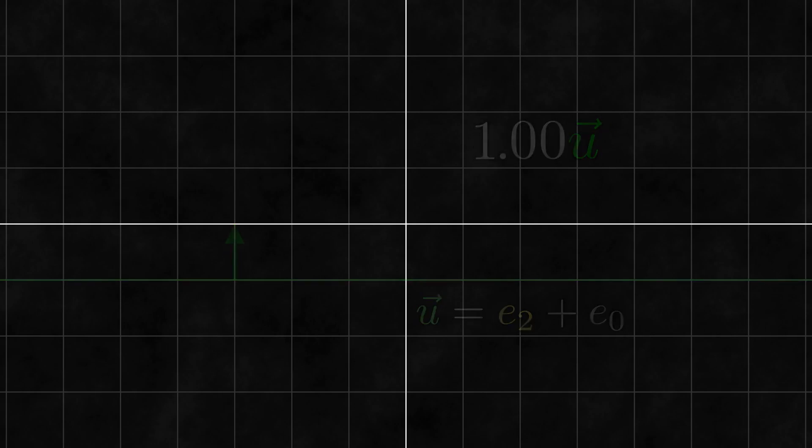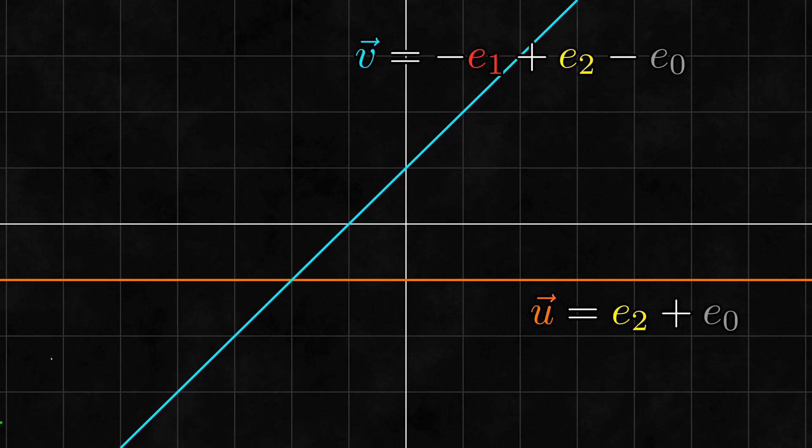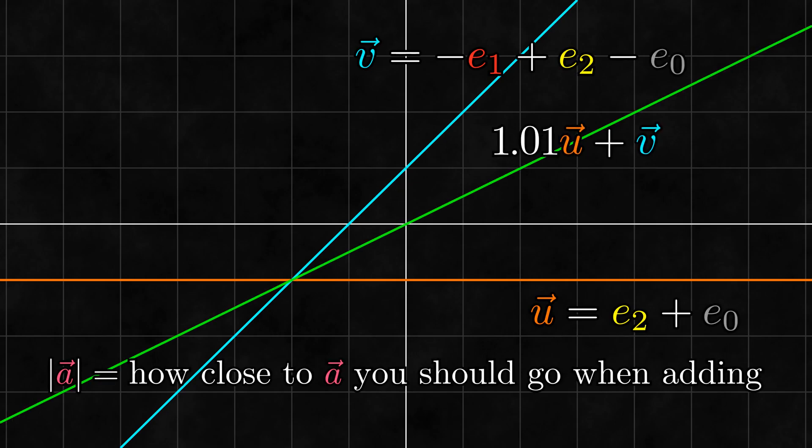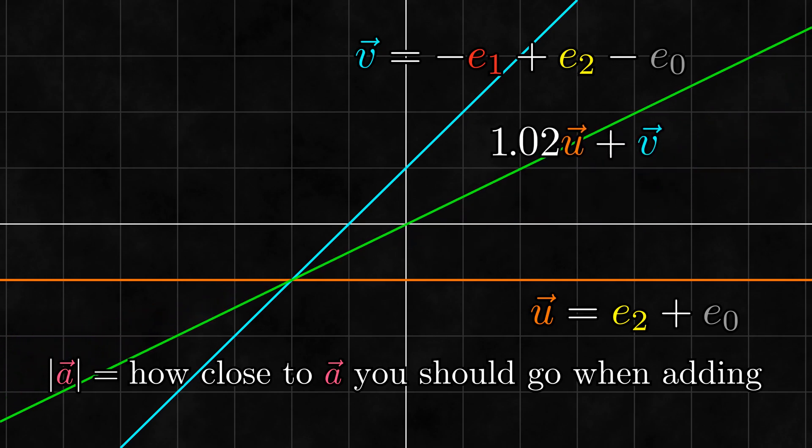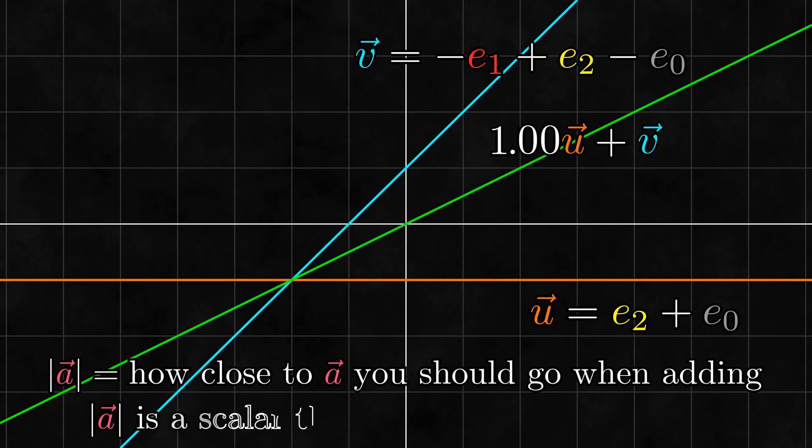The last thing I want to do here with this linear space is to investigate the magnitude of a line a little more. We earlier said that every line has a magnitude associated with it, which represents how close to it you should go when adding. Now that we know a bit more about how lines are added, let's look into how exactly to calculate this magnitude. We know that the magnitude is some scalar value that changes as we scale a line, but what value is it exactly?